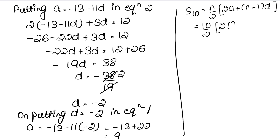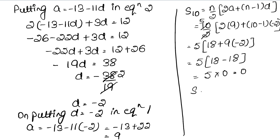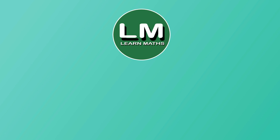Toh S10 = 10/2 into (2 into 9 plus (10-1) into minus 2) = 5 into (18 plus 9 into minus 2) = 5 into (18 minus 18) = 5 into 0 = 0. Sum of first 10 numbers ka answer aaya 0.